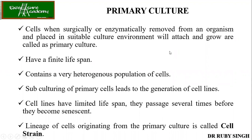What is primary culture? This is important. When you start working in a research lab, you don't have primary culture — what you have is secondary culture. Making primary culture is quite difficult. The cells are surgically or enzymatically removed from the organism and placed in a suitable culture environment where they can grow. They have a finite lifespan — meaning after 25 to 40 cycles of division, the cells will die and cannot further divide.